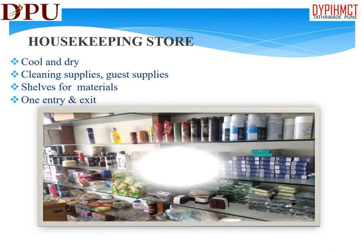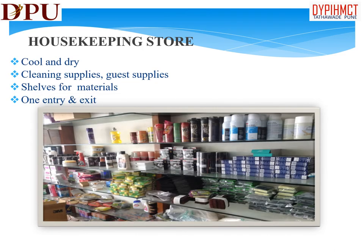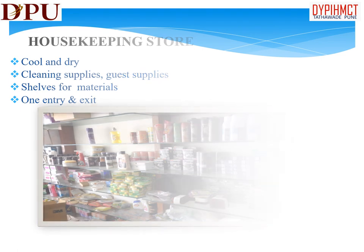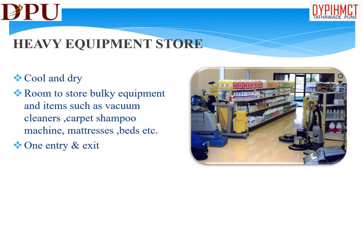Housekeeping stores: this is a room to store items such as cleaning supplies and so on, which are issued on a daily basis. It should ideally be clean, dry, and securely locked. Heavy equipment store: this room is used to store bulky equipment and items such as vacuum cleaners, carpet shampoo machines, ladders, roll-away beds, and mattresses. It should be a clean, dry, cool room that can be locked when not in use.